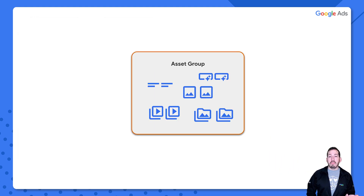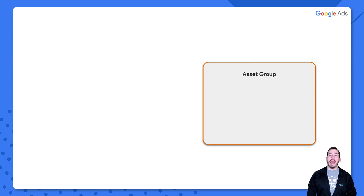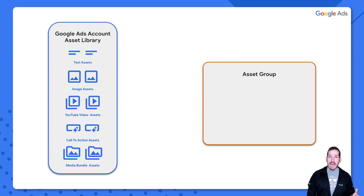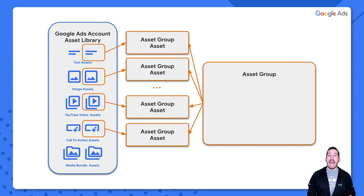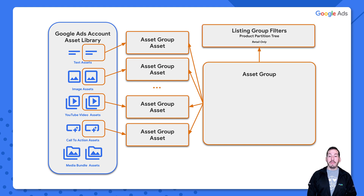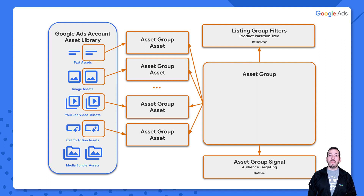An asset group is probably exactly what you imagined — a collection of assets. Except not exactly. We don't add assets directly to the asset group. In PMAX, we're moving towards having an account-level asset library, and we attach the assets in that library with a mechanism called an asset group asset. There's more to an asset group than just that. We can also attach listing group filters to an asset group to form a product partition tree for retail campaigns, which we'll cover in the next episode. We can also attach asset group signals for advanced audience targeting, providing a reference to an audience ID to let Google know what kinds of audiences we think would convert very well.